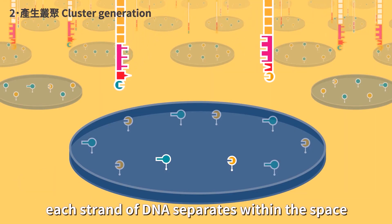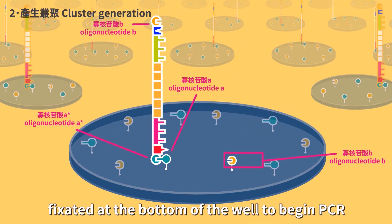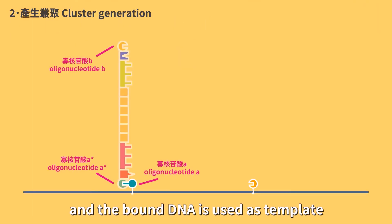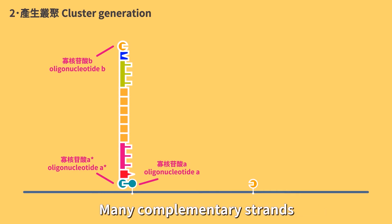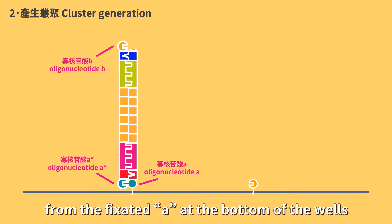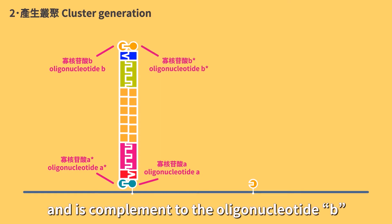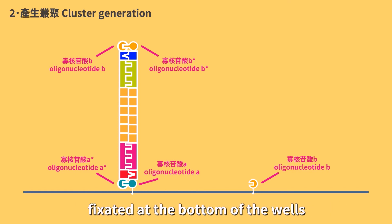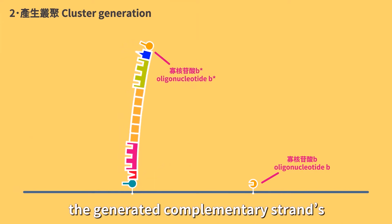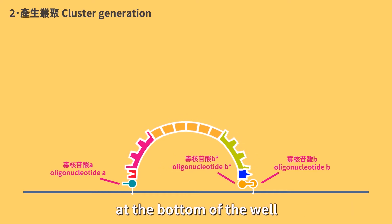When the sample is flowed into the flow cells, each strand of DNA separates within the space, and the A star end randomly binds to oligonucleotide A fixated at the bottom of the well to begin PCR. Oligonucleotide A is used as primer and the bound DNA as template. Many complementary strands are simultaneously generated by elongating from the fixated A. Since the other end will be B star and is complement to oligonucleotide B fixated at the bottom, when double strand is denatured and template DNA is washed out, the generated complementary strands B star end will bind to nearby oligonucleotide B.